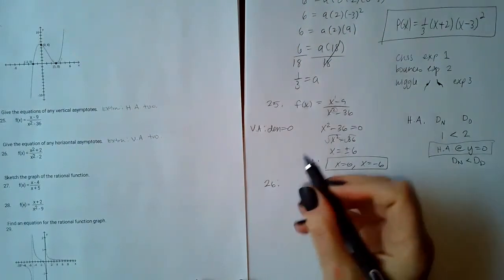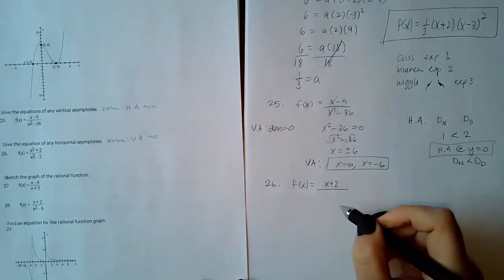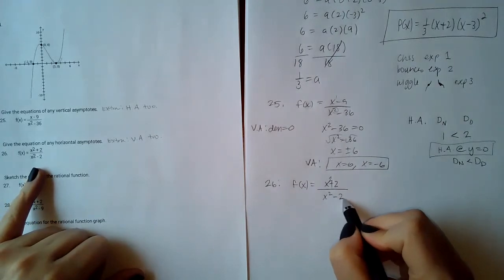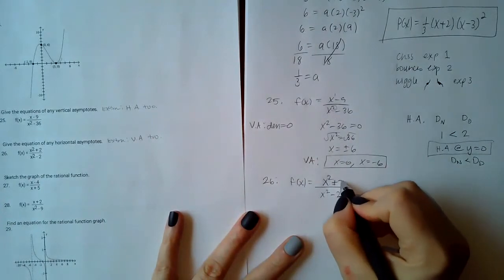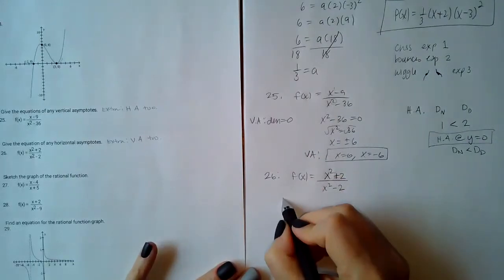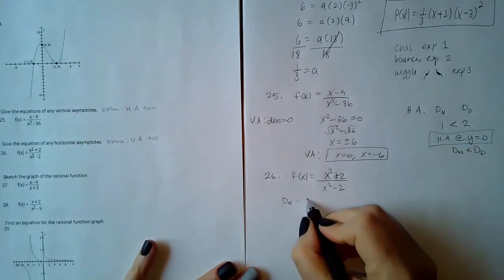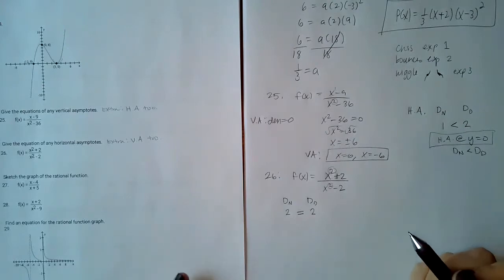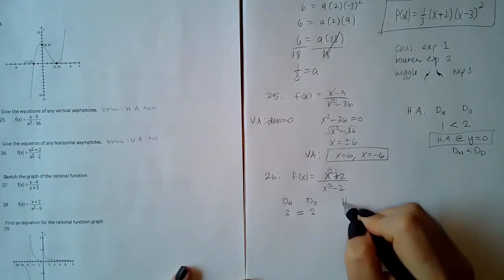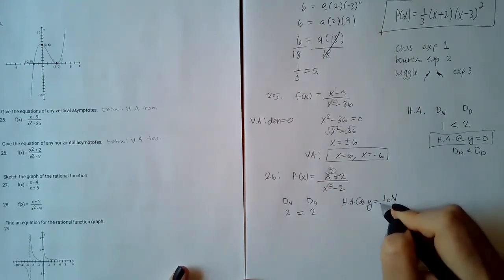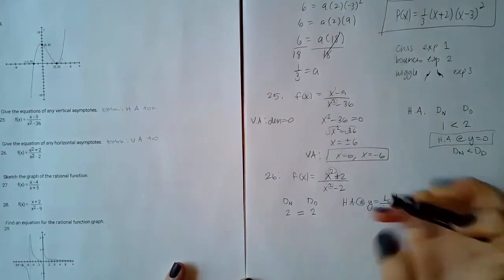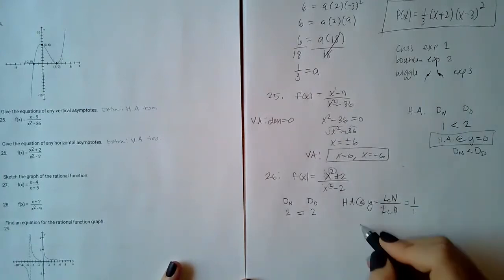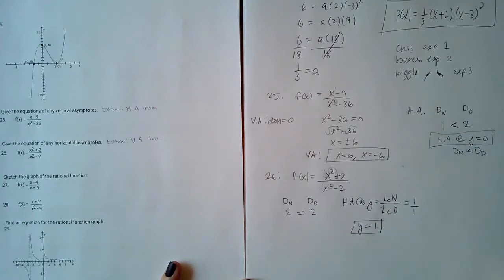For number 26, the function is f(x) = (x² + 2) / (x² − 2). For the horizontal asymptote, the degree of the numerator is 2 and the degree of the denominator is also 2 — they're equal. When the degrees are equal, the horizontal asymptote is y = leading coefficient of numerator / leading coefficient of denominator. Both leading coefficients are 1, so 1/1 = 1. The horizontal asymptote is y = 1.